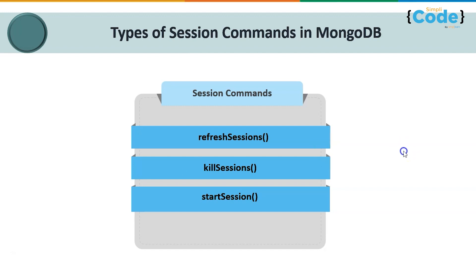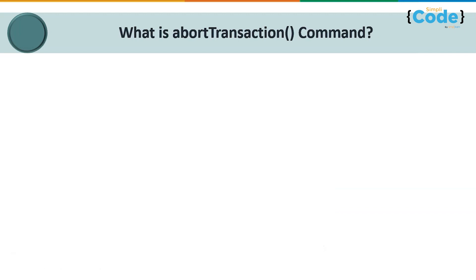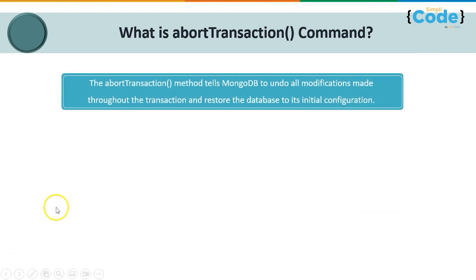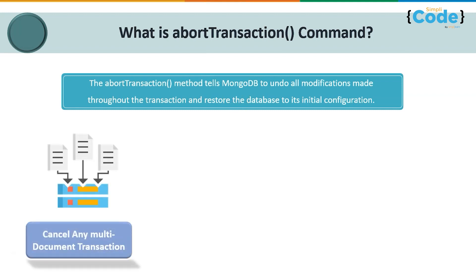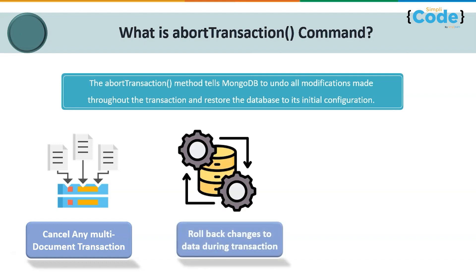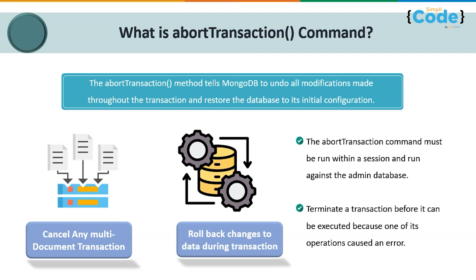The abort transaction command tells MongoDB to undo all modifications made throughout the transaction and restore the database to its initial configuration. It terminates all multi-document transactions and rolls back any changes made by operations within the transaction — the transaction ends without saving any changes. The abort transaction command must be run within a session and run against the admin database only.